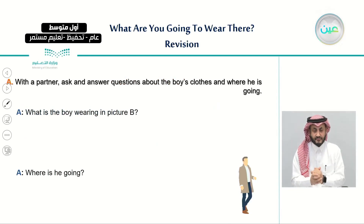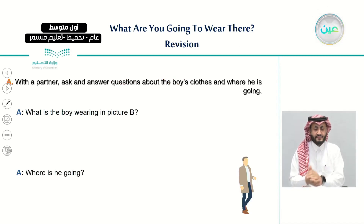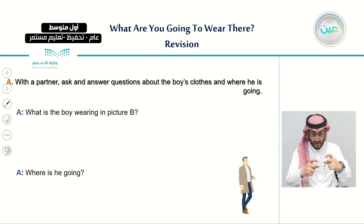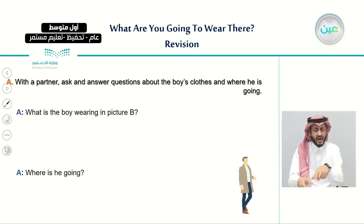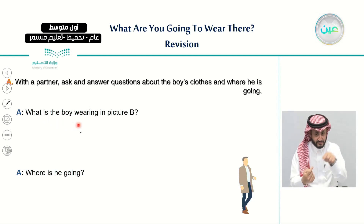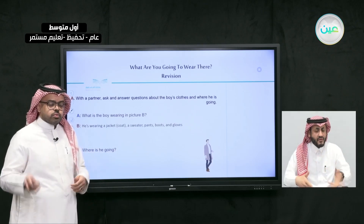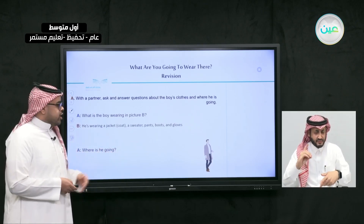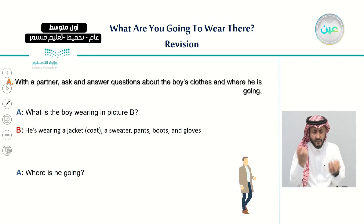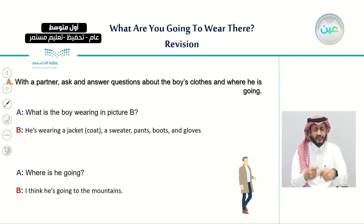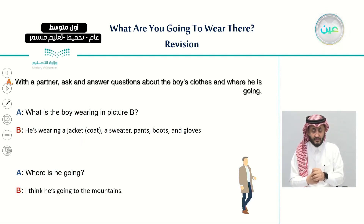Last lesson we had a writing exercise where we showed pictures of different men wearing different clothes. We had one question: what is the boy wearing in picture A, B, C, and D? We learned how to describe what each of them is wearing. For example: he is wearing a jacket, a sweater, bands, boots and gloves.